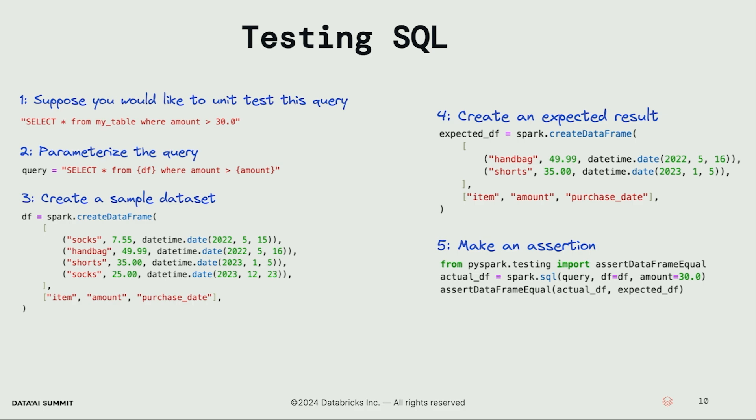Let's make an assertion. In this case, we're not going to use Chispa — we're going to use the built-in PySpark testing functionality. From pyspark.testing, we import assertDataFrameEqual. To compute our actual DataFrame, we invoke our query with amount set to 30. Then we use the built-in assertDataFrameEqual function to verify that the actual DataFrame is the same as the expected DataFrame. The built-in PySpark testing utilities are still less fully featured than Chispa, but hopefully open source developers will build out the rest of this functionality.